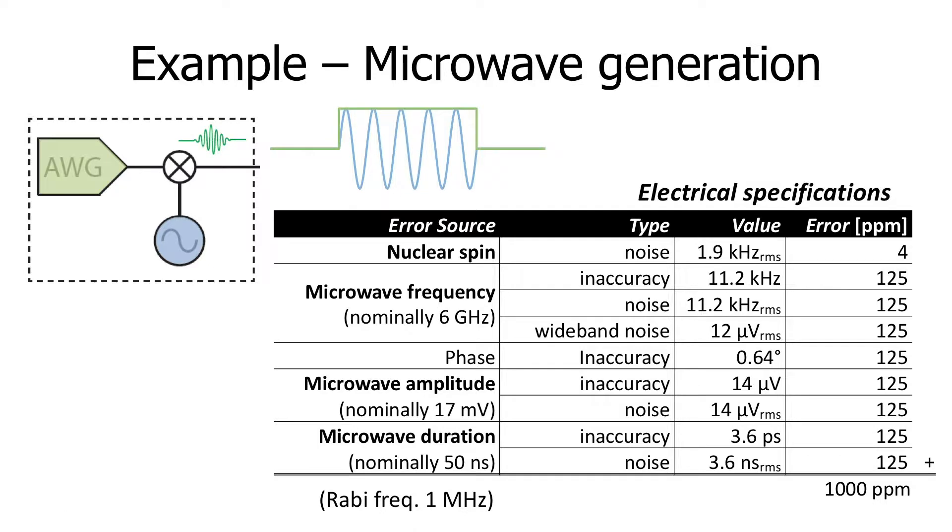In this table, we show all the possible sources of errors in such pulse, such as amplitude errors, frequency errors, noise in the amplitude, noise in the phase, and so on and so forth. And we can compute, here at the bottom, the 1000 parts per million total error that a pulse, assuming all these error sources, will produce in the quantum computer. This error would result into a 99.9% fidelity for the qubit operation. In this way, we can really relate qubits and electronics and find out how good our electronics should be.